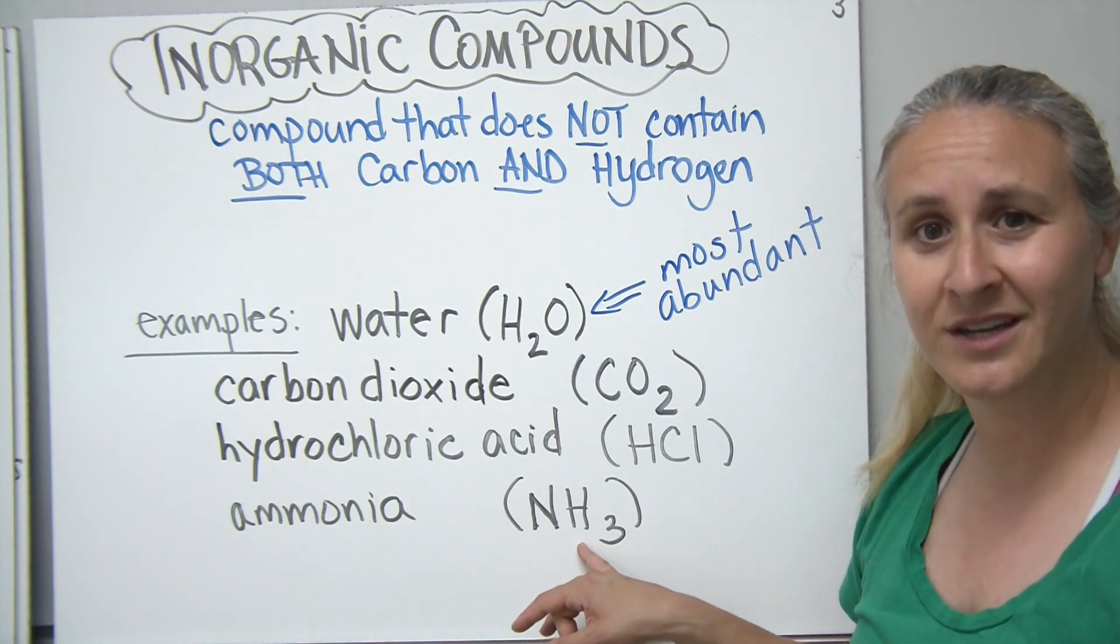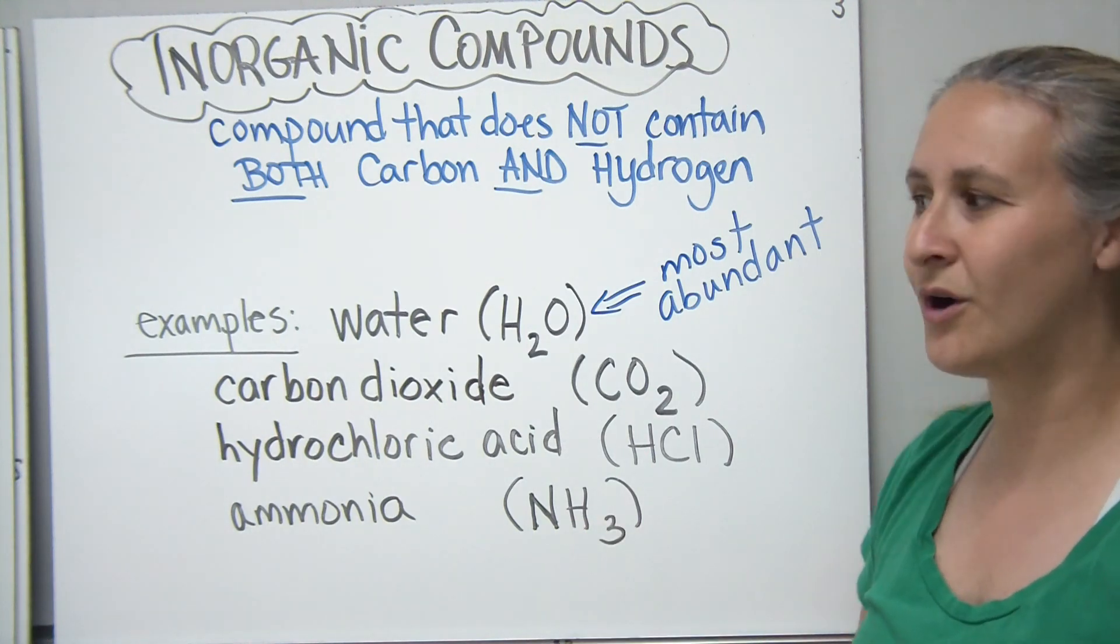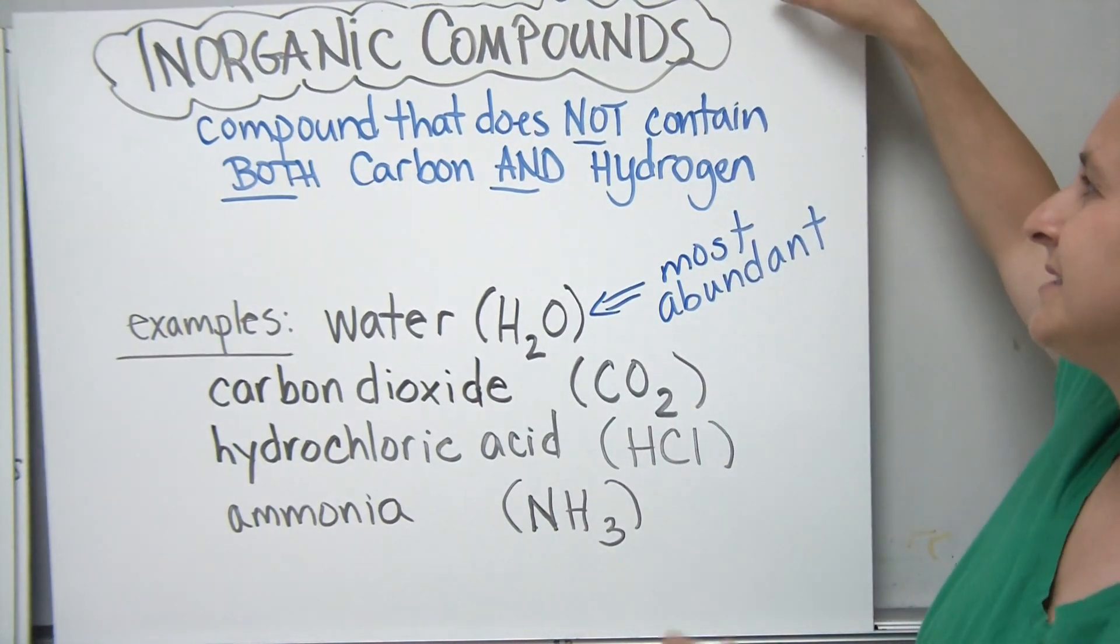And ammonia has N for nitrogen and then three hydrogens. So once again, we have some hydrogen, but there's no carbon there, so it's not organic. It's inorganic.